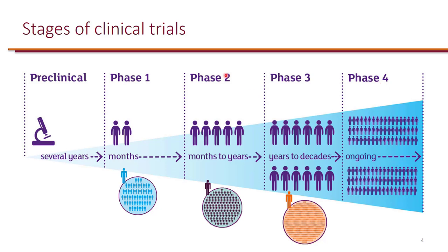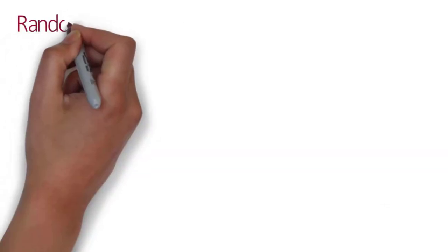Now, there are some exceptions to this. For example, antibiotics can actually be approved after completion of phase two studies, with the condition that they will have to continue to do a phase three study and submit the data to the FDA.